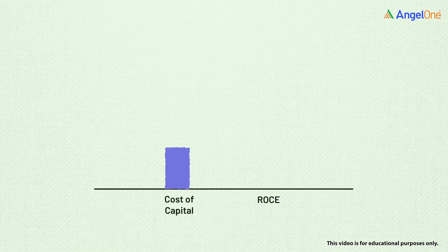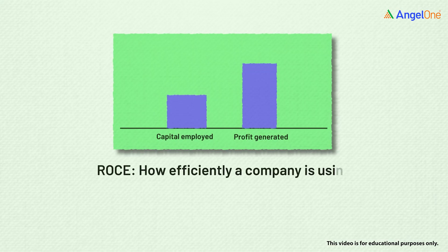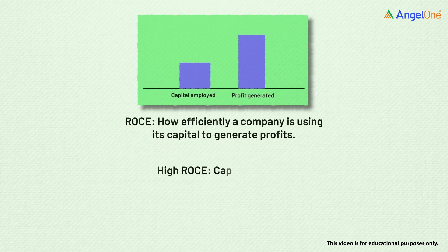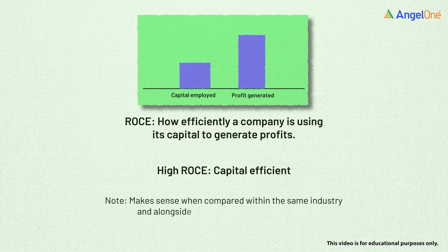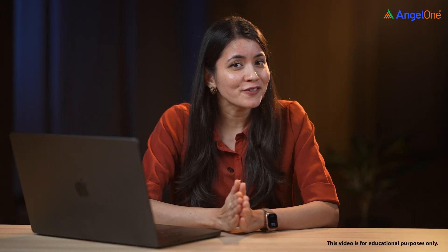But if ROCE stays higher than the cost of capital for years, that is what you call value creation. It shows the company is not just growing, but making money in a way that actually benefits shareholders. To wrap it up: ROCE tells you how efficiently a company is using its capital to generate profits. A high ROCE means the business is capital efficient, but that number only makes sense when compared within the same industry and alongside the company's cost of capital.